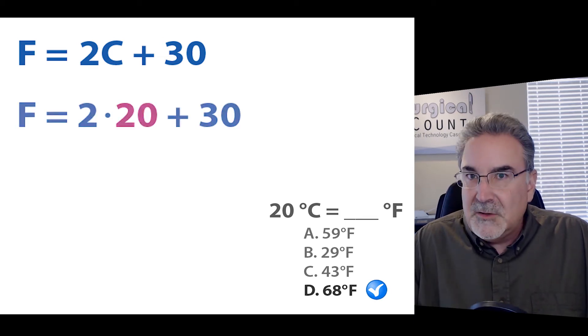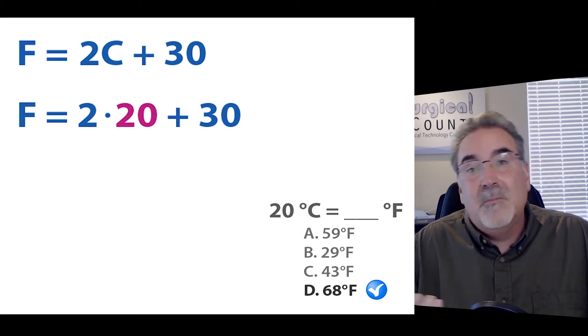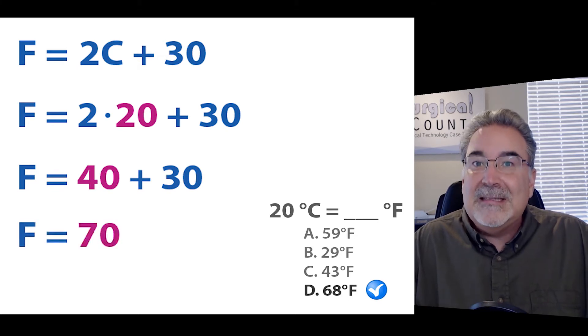So first, we'll plug in 20 degrees for C, just like we did before. 2 times 20, that's easy, that's 40. And 40 plus 30, well, that's easy, that's 70.